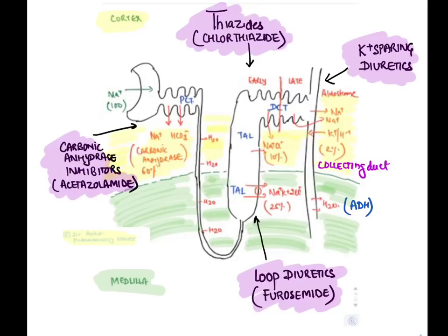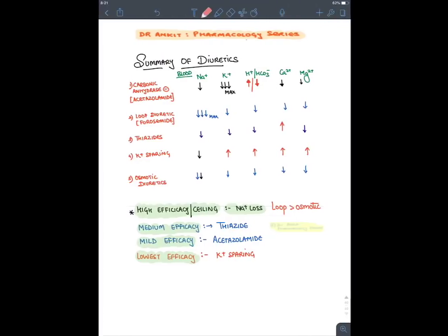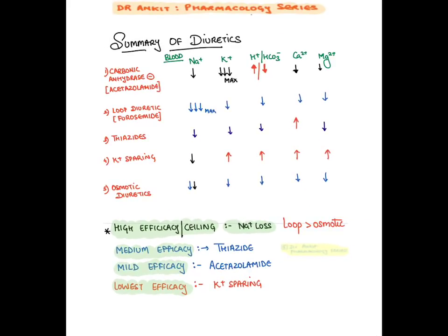In the late part of DCT and cortical collecting duct, aldosterone hormone is responsible for sodium absorption; when sodium is absorbed, potassium and hydrogen ions are sacrificed. Here 2% of sodium is reabsorbed, and this aldosterone action is inhibited by potassium-sparing diuretics — sodium is lost in urine while potassium is spared. In the medullary collecting duct, only water is reabsorbed with the help of ADH (anti-diuretic hormone). The most efficacious diuretic is loop diuretic, followed by osmotic, and the least efficacious is potassium-sparing.